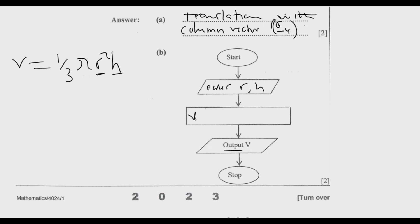Once we enter, we need to calculate. V equals 1/3 multiplied by π multiplied by r multiplied by r (because it's r²) multiplied by h. Once you do that, the next thing is to output V, then stop. You get these two marks.